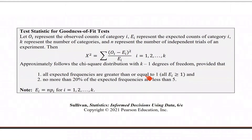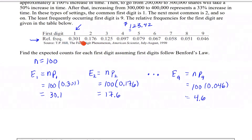Now that we know how to get expected counts, we will look at the test statistic for the goodness of fit test. Suppose o-sub-i represents the observed counts of category i, e-sub-i represents the expected counts of category i, k represents the number of categories, and n is the number of independent trials. The chi-square test statistic is found by summing the observed minus expected counts squared, divided by the expected count, across all categories. For Benford's law, there are nine categories, so k equals nine.